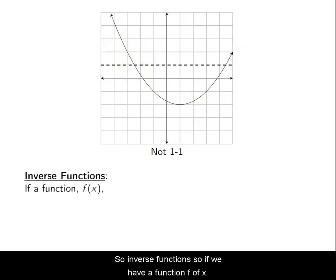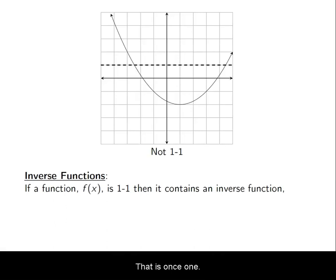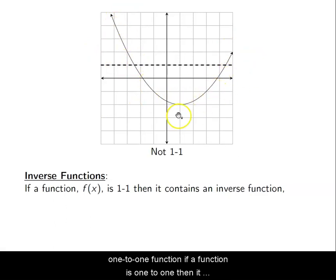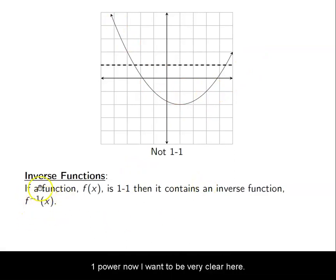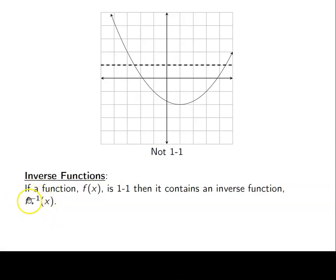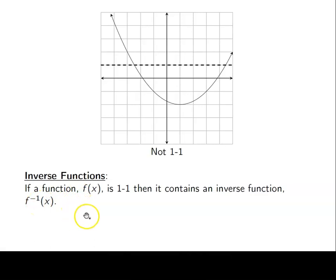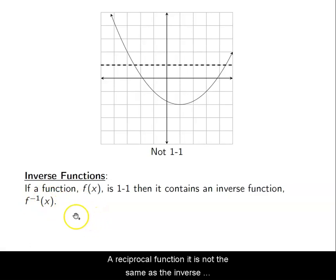So, inverse functions. If we have a function f(x) that is one-to-one, then it contains an inverse function — that's the importance of a one-to-one function. The notation for inverse is f⁻¹(x). I want to be very clear that this is a function notation for f inverse; it is not the same as 1/f(x), which is an algebraic representation of a reciprocal function.